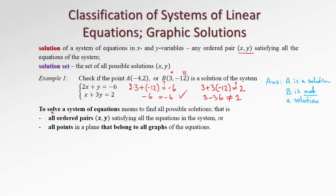Let's summarize. To solve a system of equations means to find all possible solutions. In example 1, we just checked that A is a solution, but how do we know if there are no other solutions? We didn't actually solve the system — we just checked if those particular points are solutions. To solve a system means to find all ordered pairs x, y that satisfy all equations, or all points in a plane that belong to all graphs of the equations. Since we are talking about linear equations, the graphs are lines. Therefore, solutions of a system of linear equations will be the intersecting points of the lines in a system of coordinates.